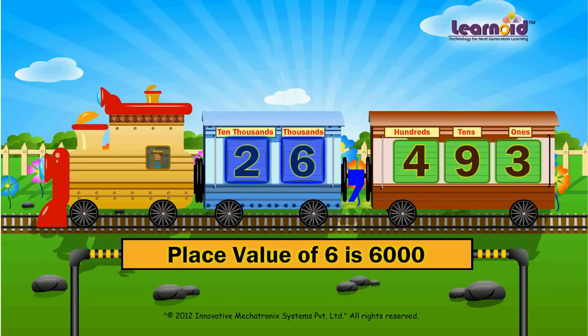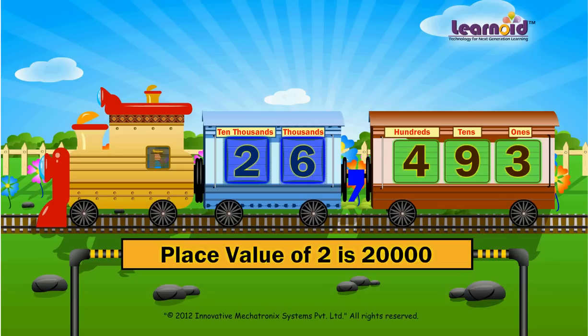Number 2 is in the 10,000's window. Its place value is 20,000.